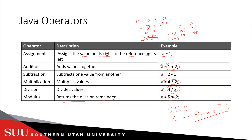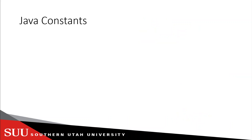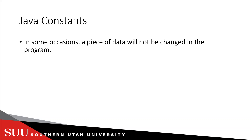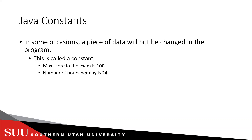Now we have seen the operators and variables — let's talk about Java constants. In some cases a piece of data will not be changed in the program, so we will have the same value throughout the program. This is what we call a constant. For example, if I'm talking about an exam and the maximum score is one hundred, I can save this as a constant. Similarly, the number of hours per day is 24 — again, a constant that's never going to change.